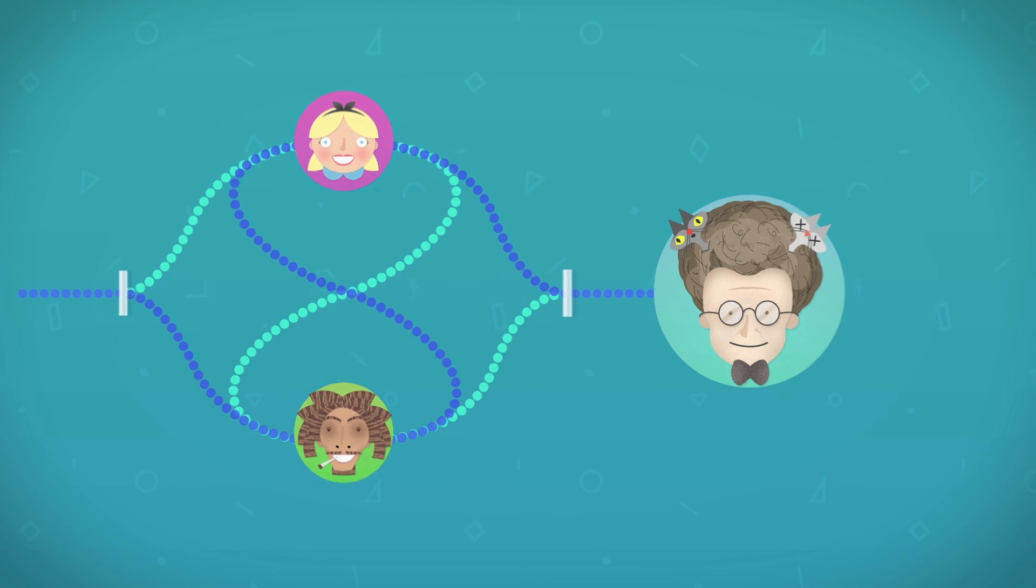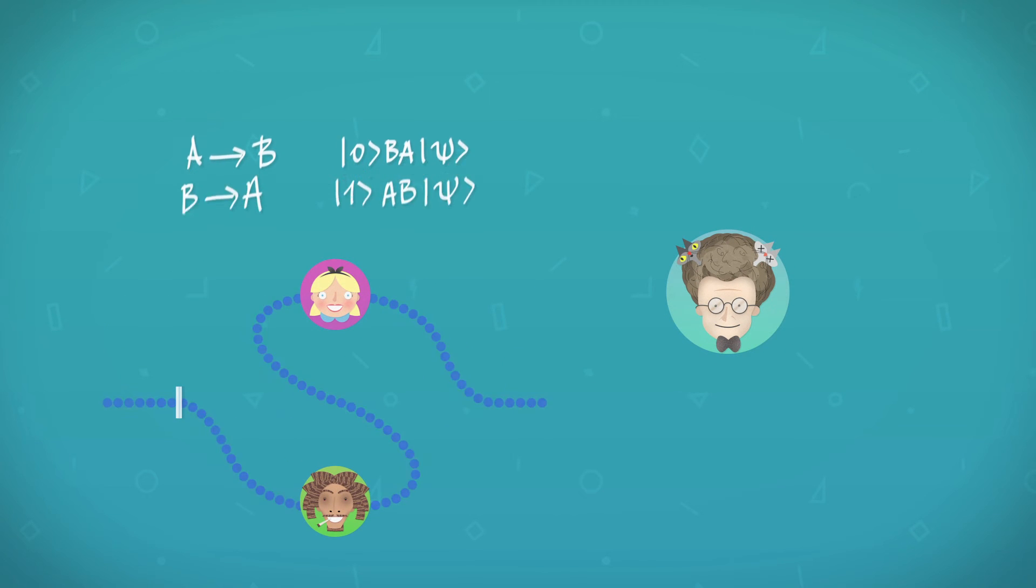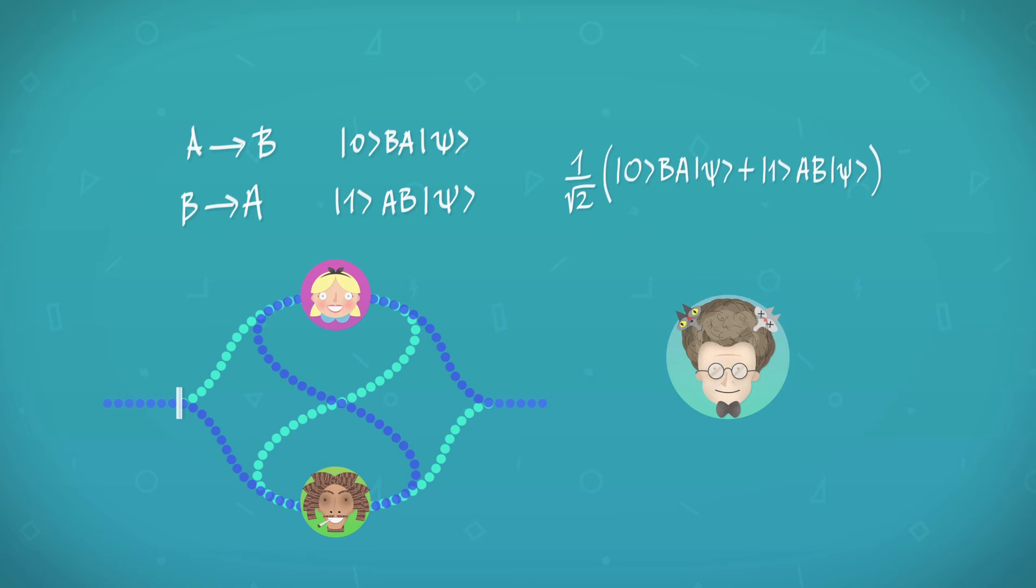Which interference patterns are these? If Alice applies an operation A to the photon, and Bob applies an operation B, then in the end of the interferometer, we produce this state. And after we interfere the paths 0 and 1, we get this state.